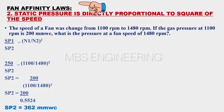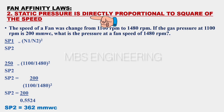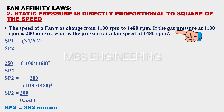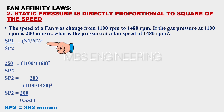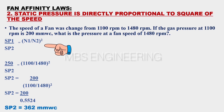Next, we learn the second affinity law and simple calculations. The second affinity law for fans: static pressure is directly proportional to the square of the speed. Assume the speed of a fan was changed from 1100 RPM to 1480 RPM. If the gas static pressure at 1100 RPM is 200 millimeters water column, what is the pressure at a fan speed of 1480 RPM? The static pressure SP1 divided by SP2 is directly proportional to the square of speed N1 divided by N2, where SP1 and SP2 are static pressure in MMWC at different speeds N1 and N2, and N1 and N2 are speeds in RPM.